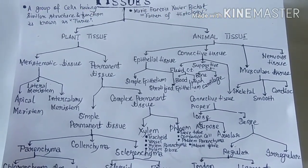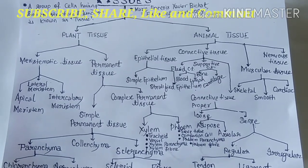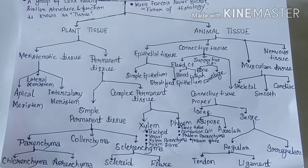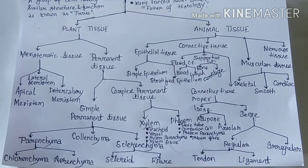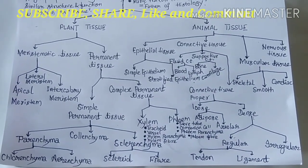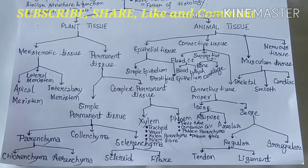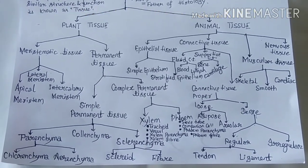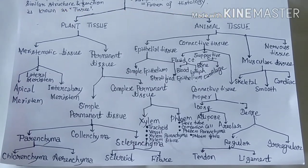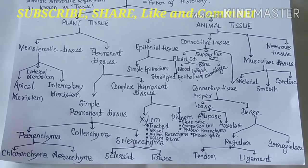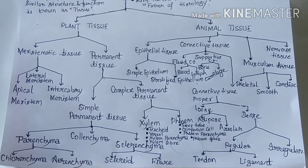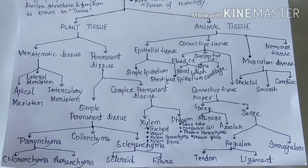Phloem tissue is helpful to translocate food particles from leaves to all parts of the plant body. Xylem tissue is of four types: tracheids, vessels, xylem parenchyma, and xylem fiber. Similarly phloem tissue is also of four types: sieve tube, companion cell, phloem parenchyma, and phloem fiber. We will study all of these in detail when we cover complex permanent tissue.